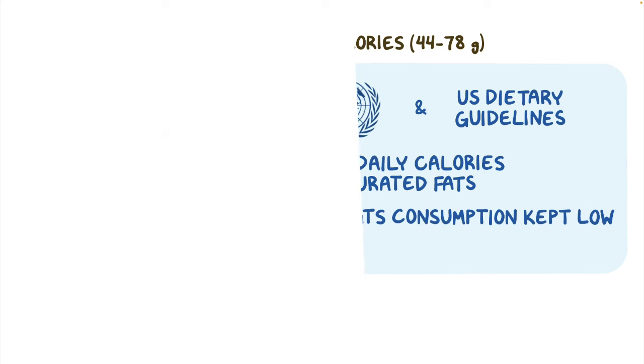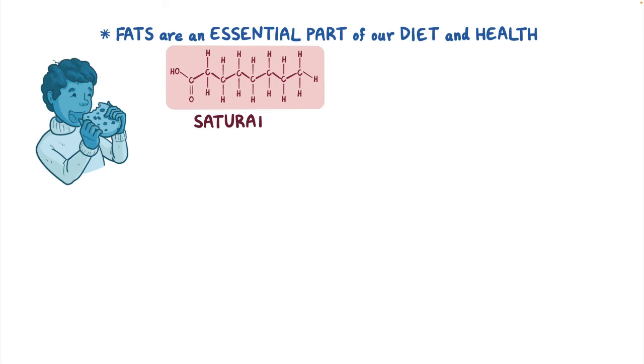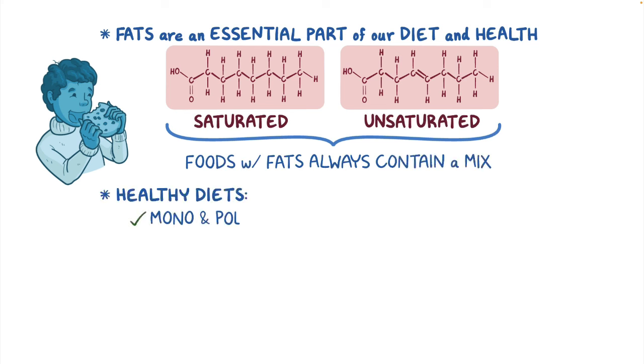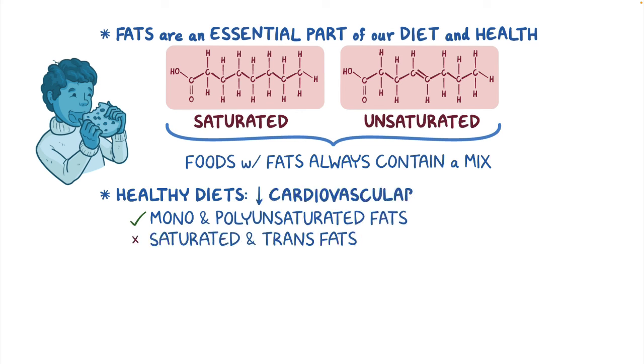Alright, as a quick recap, fats are an essential part of our diet and health. Fatty acids are either saturated or unsaturated, and foods with fat always contain a mixture of fatty acid types. Healthy diets emphasize mono- and polyunsaturated fats over saturated fats, and trans fats are associated with an increased risk of cardiovascular disease. Improvements to our diet and health can be made by focusing more on the type of fat we eat and less on the amount.